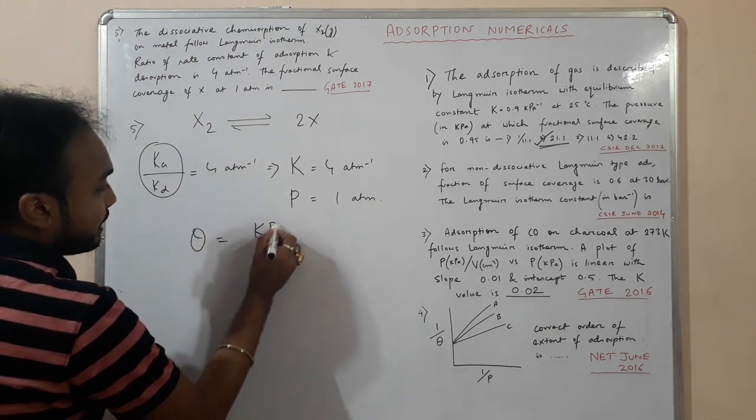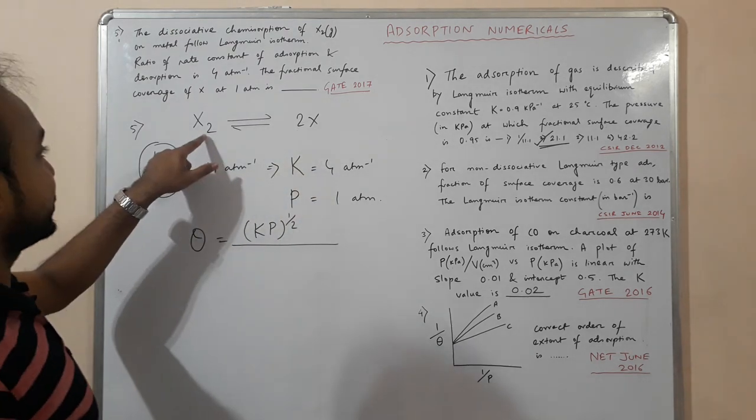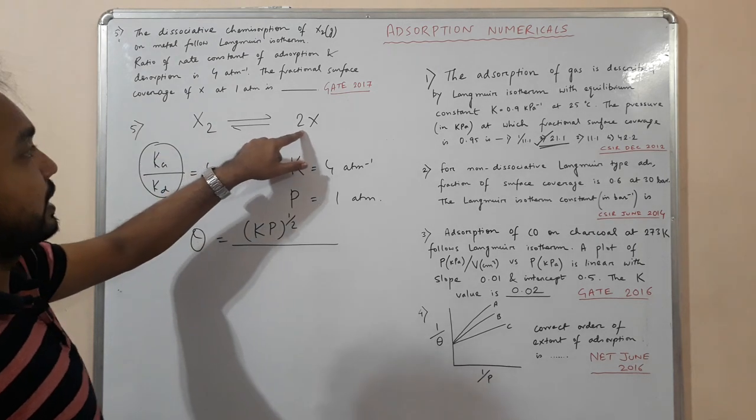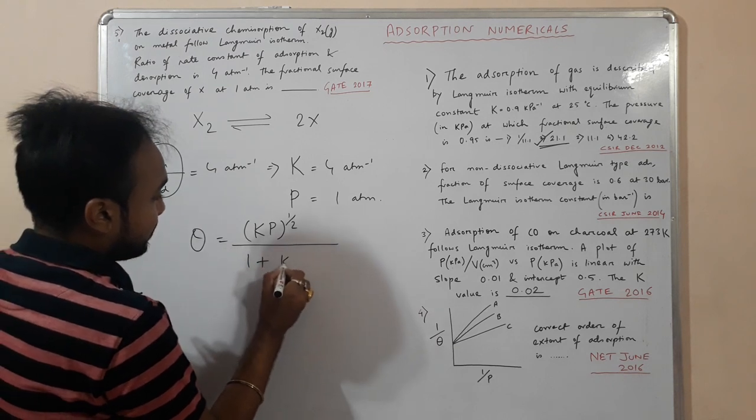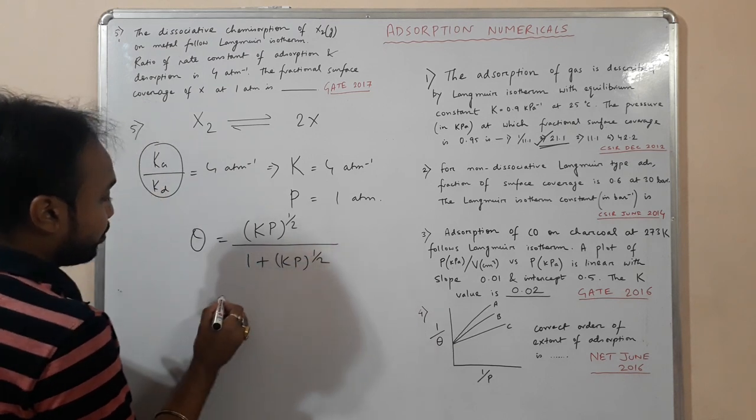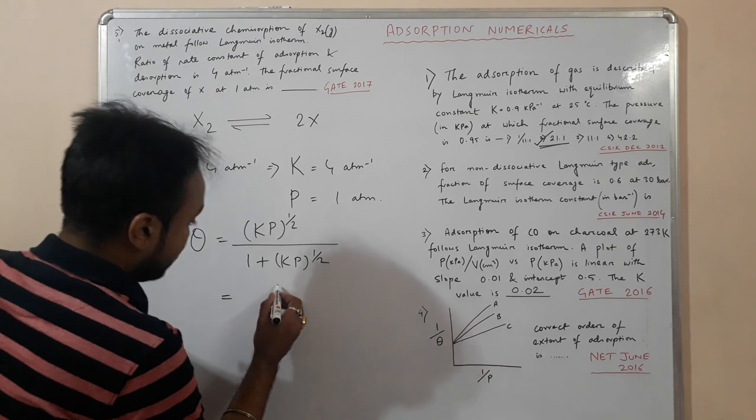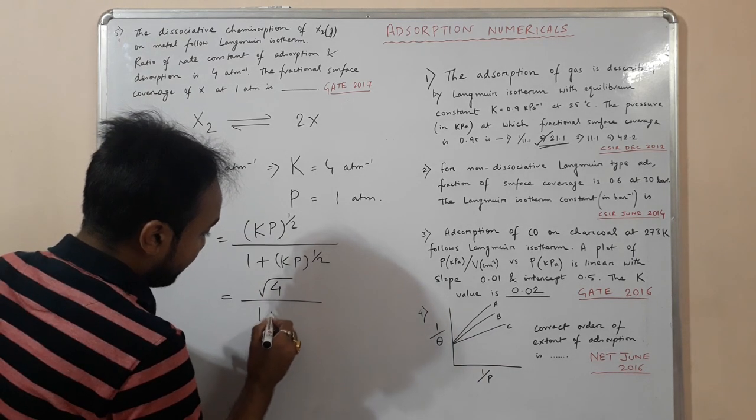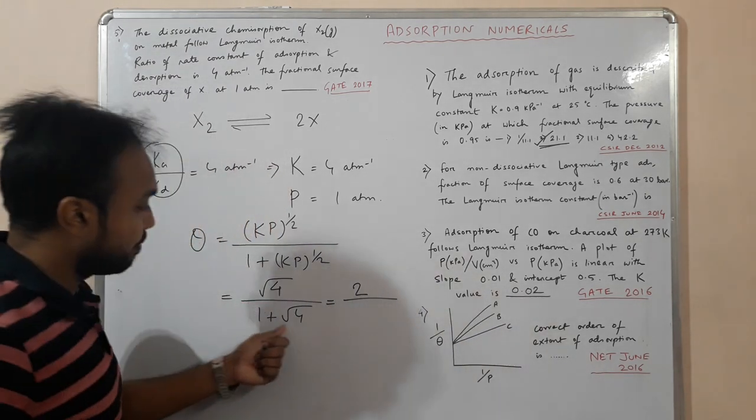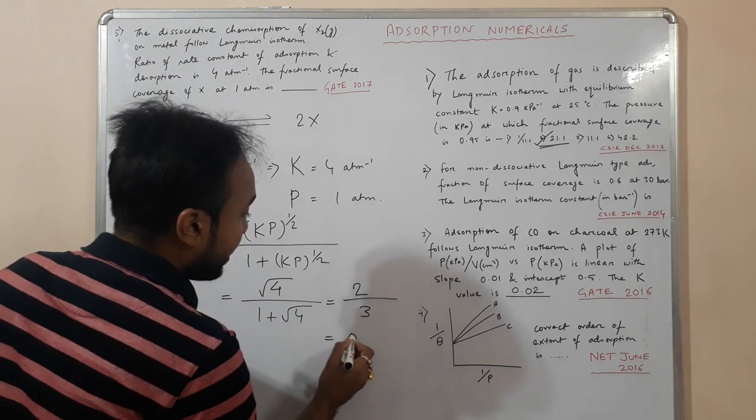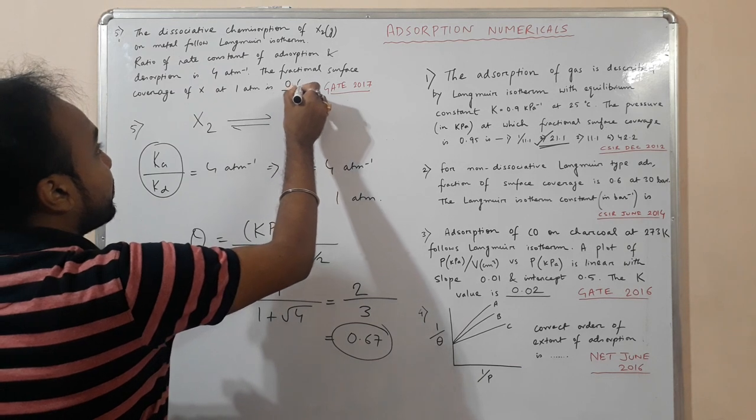What is theta now? Theta equals Kp to the power half, because it is dissociative and since it is X2 forming 2X, we have half in the powers. So 1 plus Kp to the power half. Putting the value of K as 4 and P as 1, this is root 4 by 1 plus root 4, that comes out to be 2 by 1 plus 2, which is 2 by 3, that is 0.67. This is the answer, 0.67.